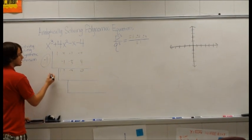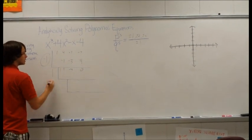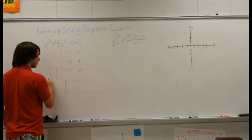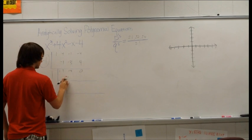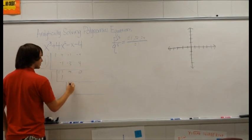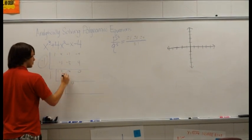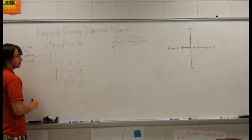So we go through the steps again. Let's try positive 1 this time. Bring down the 1. 1 times positive 1 is 1, plus 4 is 5. Times 1 is 5, plus -1 is 4. Times 1 is 4, which comes out to be 0. So 1 is a solution.